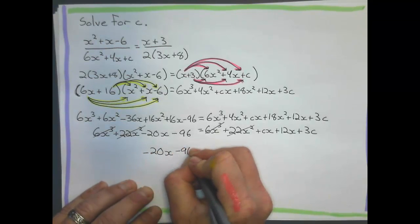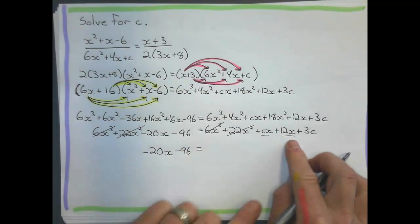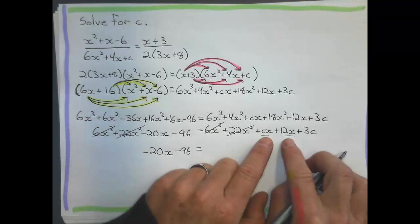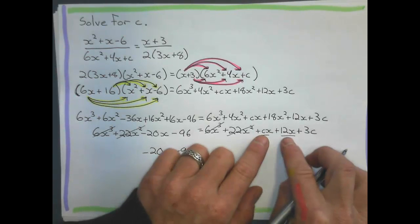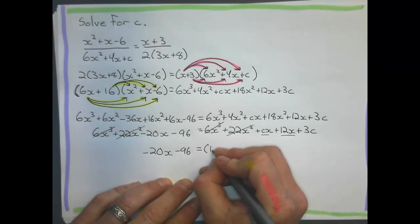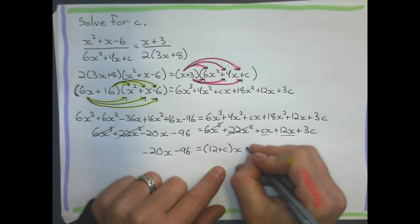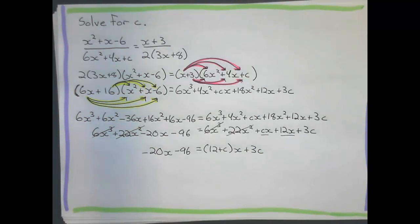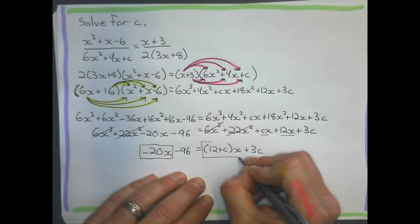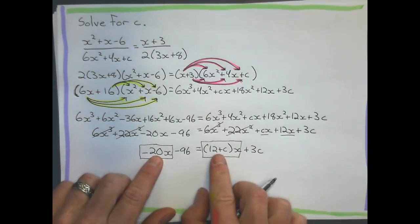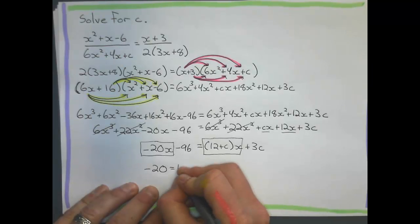Negative 20x minus 96 equals. Now, what's left over here? Now, this, here's that tricky part that I was talking about. Cx plus 12x. Those are actually like terms. Because they both just have x to the 1. So, what this is really like, I can combine these like terms. And their coefficient is actually 12 plus c, brackets, x. I just collected those like terms. There it is. 12 plus c is the coefficient. And then the plus 3c is just at the end. Well, now what? I want to solve for c. Well, negative 20x must equal 12 plus cx. Negative 20 must be that coefficient. Therefore, negative 20 must equal 12 plus c.